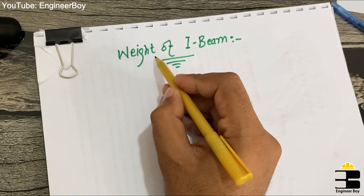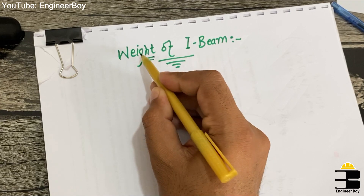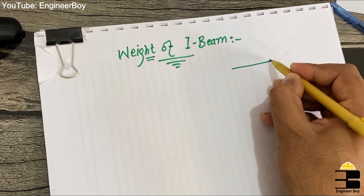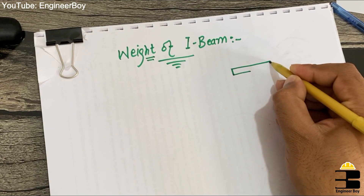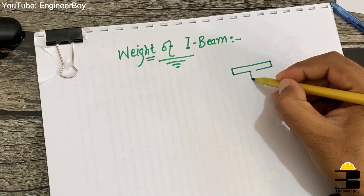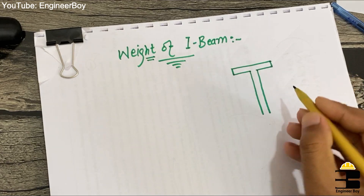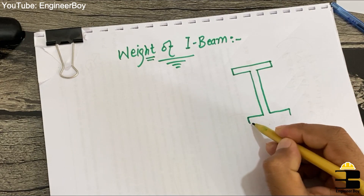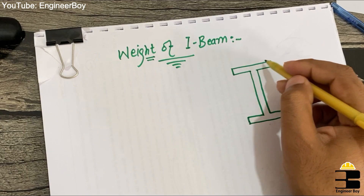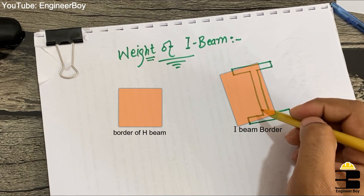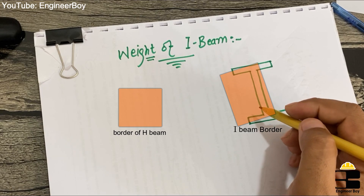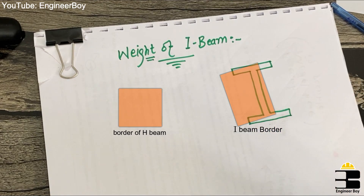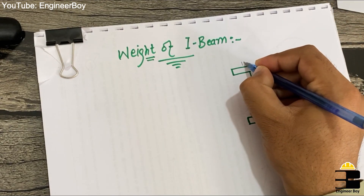Hey guys, I'm Sulaiman Khan and you're watching The Engineer Why. In this video we'll be calculating the weight of an I-beam. Let me draw the cross-section of the I-beam. Don't confuse this with an H-beam — the I-beam makes a border that looks like a rectangle, whereas the H-beam makes a border of a square. The flange is 15 centimeters.